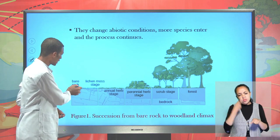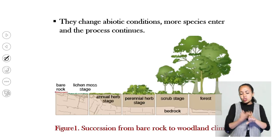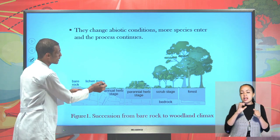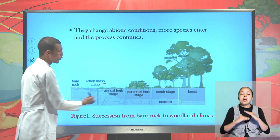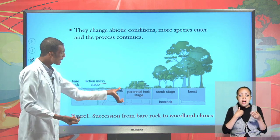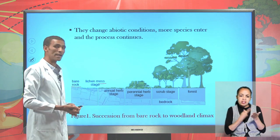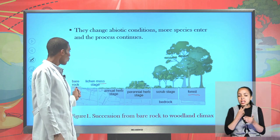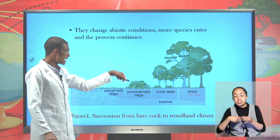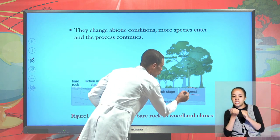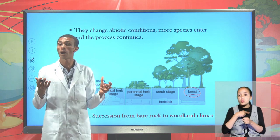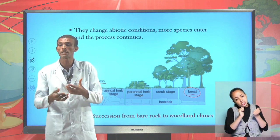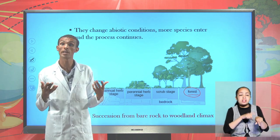For example, a community that invades a bare rock where there is no moisture and no soil: following the series of stages, lichens become outcompeted by moss. When moss passes, it forms primitive soil and moisture, and annual herb stage becomes formed, then perennial herb stage, and finally the forest community becomes established. No community can exist as it is — there is a gradual replacement of one community by another within a given time period following a series of stages.